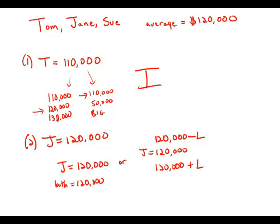So that they average out to exactly $120,000. And so you see in either of these cases, whether all three of them equal $120,000, or if the other two are symmetrically above and below $120,000, either way, the median is $120,000. And so this piece of information is sufficient to allow us to figure out the value of the median.